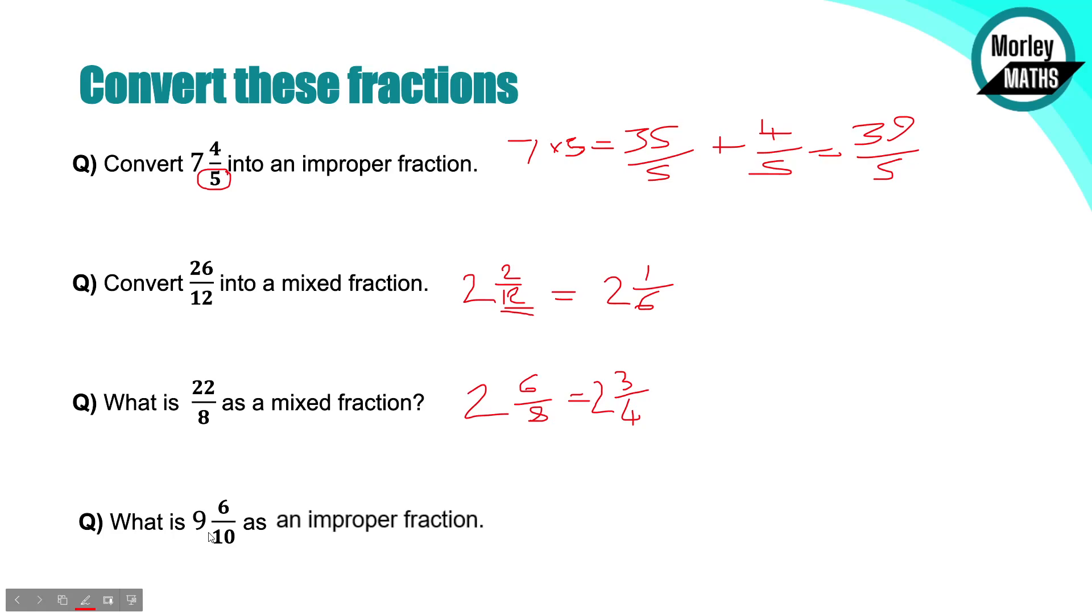I've got the final one. What is nine and six tenths as an improper fraction? Again, we can look at how many tens are there in that nine whole thing there. So nine times 10 equals 90. So we've got 90 tenths, and we've got another six. So 90 plus six tenths equals 96 tenths. And that's it.